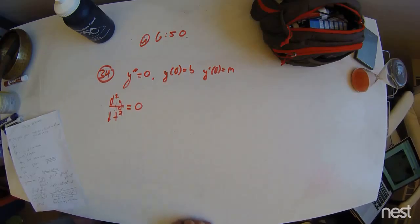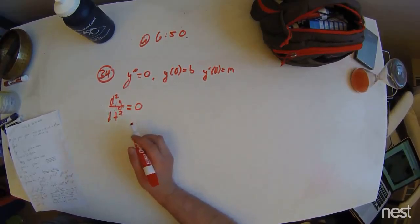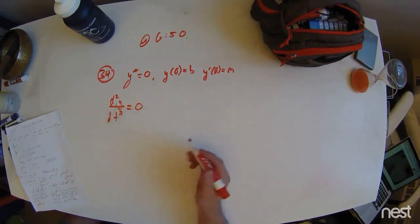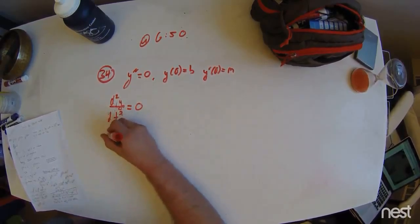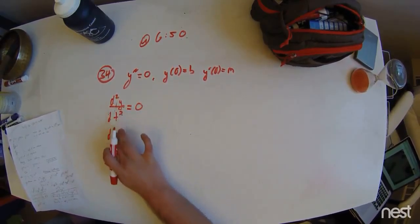The integration, we can integrate the right-hand side and the left-hand side with respect to t. So, we have d squared, my bad,